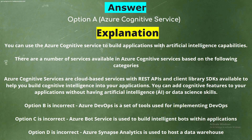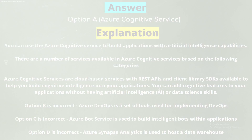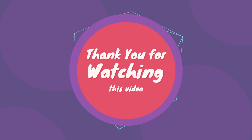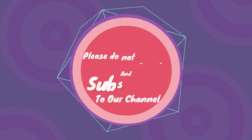Option B is incorrect — Azure DevOps is a set of tools used for implementing DevOps. Option C is incorrect — Azure Bot Service is used to build intelligent bots within an application. Option D is incorrect — Azure Synapse Analytics is used to host a data warehouse. Thank you for watching this video. Please do not forget to like this video and subscribe to our channel. Buy our AZ-900 premium questions with 50% off — check the link in the description.